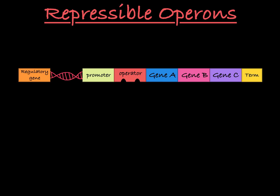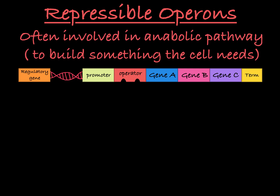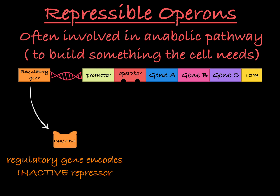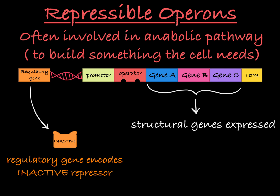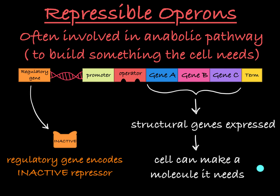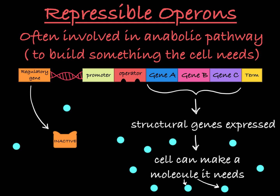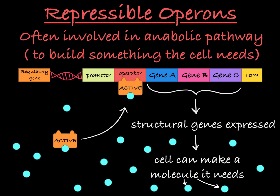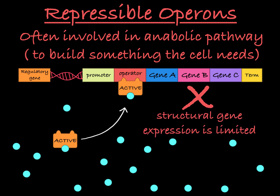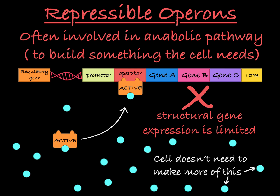A repressible operon is effectively the opposite. Often, the genes in a repressible operon encode proteins involved in an anabolic pathway, a pathway that makes something that the cell usually needs. In a repressible operon, the regulatory gene encodes an inactive repressor, so this operon is naturally expressed, allowing the genes to encode proteins that help make something important for the cell. When the molecule accumulates within the cell at high concentrations, it will bind to the repressor, changing it into the active form, allowing the repressor to bind to the operator and shut down transcription of the structural genes. This prevents the cell from making something that it already has too much of.